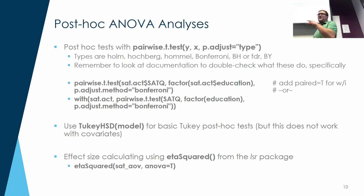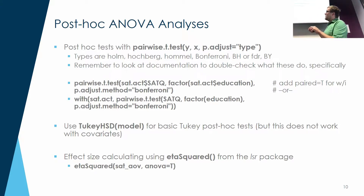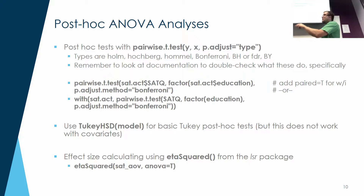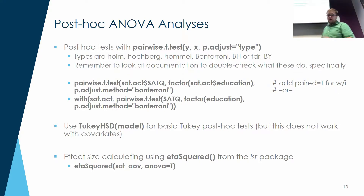Effect size calculations use eta squared, which comes from the LSR package. In DataCamp all libraries were preloaded, but in RStudio you need to load `LSR`. Use `etaSquared(model, anova = TRUE)` — the `anova = TRUE` argument gives you the full ANOVA output with the eta values. If you leave out `anova = TRUE`, you just get the effect sizes. The numbers aren't any different, just depends on what output you want.